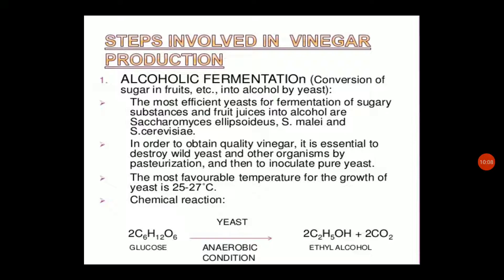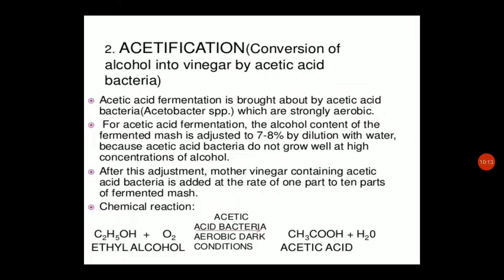The next step is acidification — conversion of alcohol into vinegar or acetic acid by acetic acid bacteria. During acetic acid fermentation, the alcohol content of the fermented mash is adjusted to 7 to 8% by dilution with water, because acetic acid bacteria do not grow well at high concentrations of alcohol. After this adjustment, mother of vinegar containing acetic acid bacteria is added at a rate of 1 part to 10 parts of fermented mash.